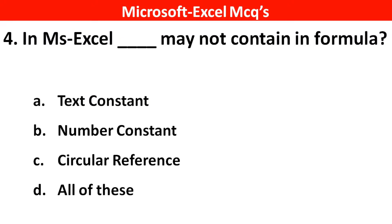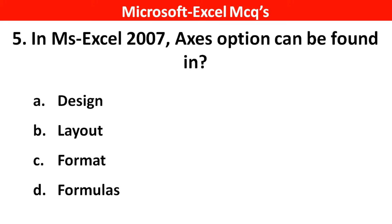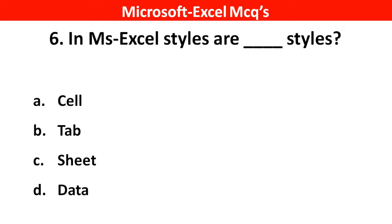Next question: in MS Excel, a formula may not contain a Circular Reference. Right answer is option C. Next question: in MS Excel 2007, the Axis options can be found in? Right answer is option B, Layout. Next question: in MS Excel, styles are Cell styles. Right answer is option A, Cell.